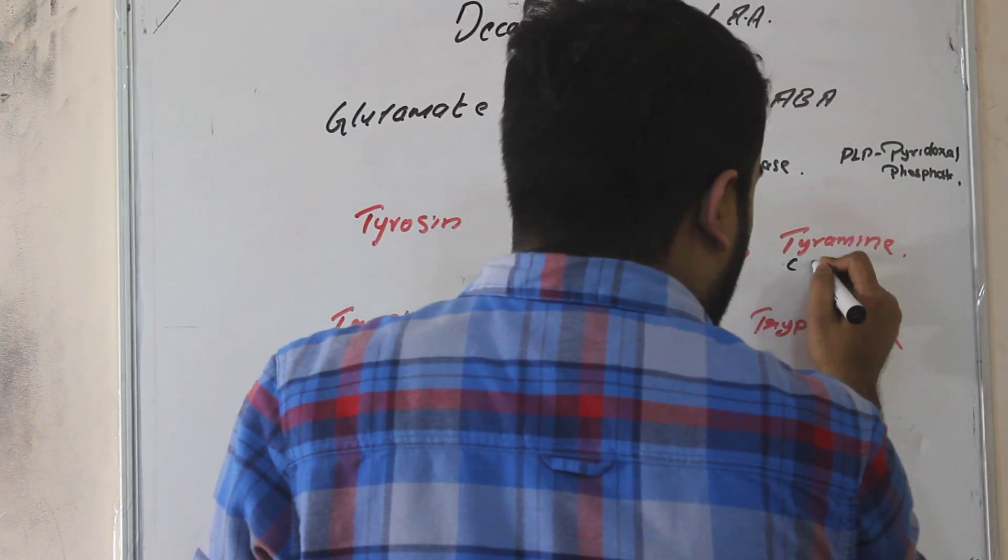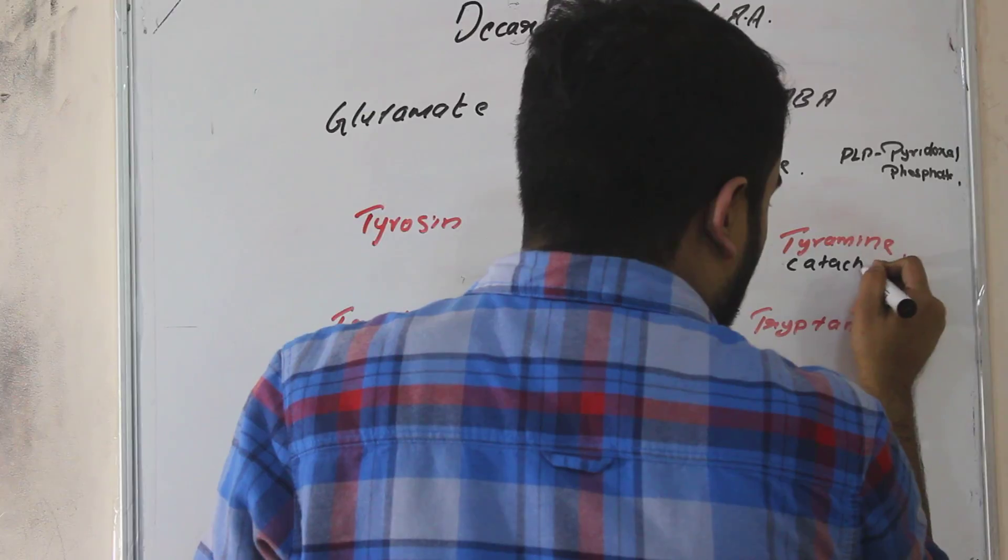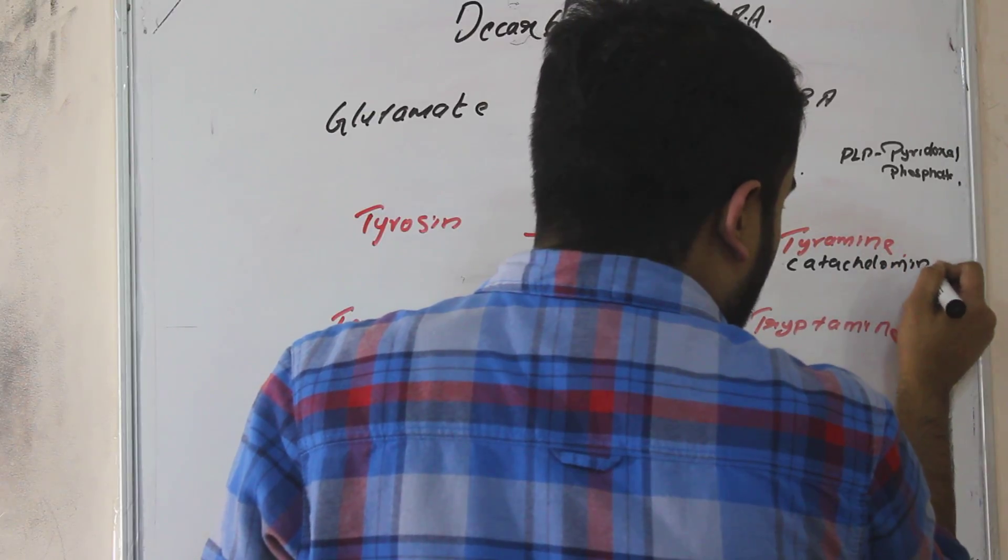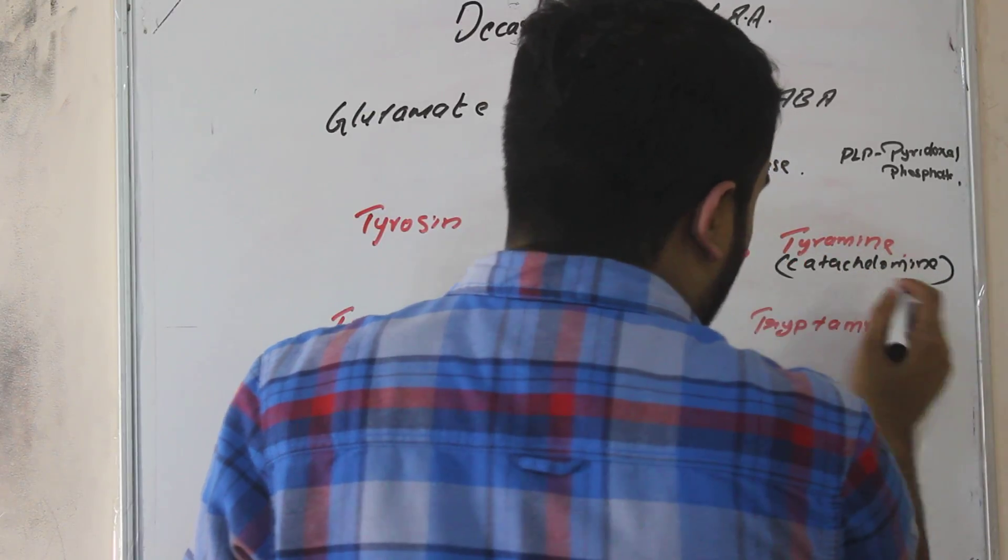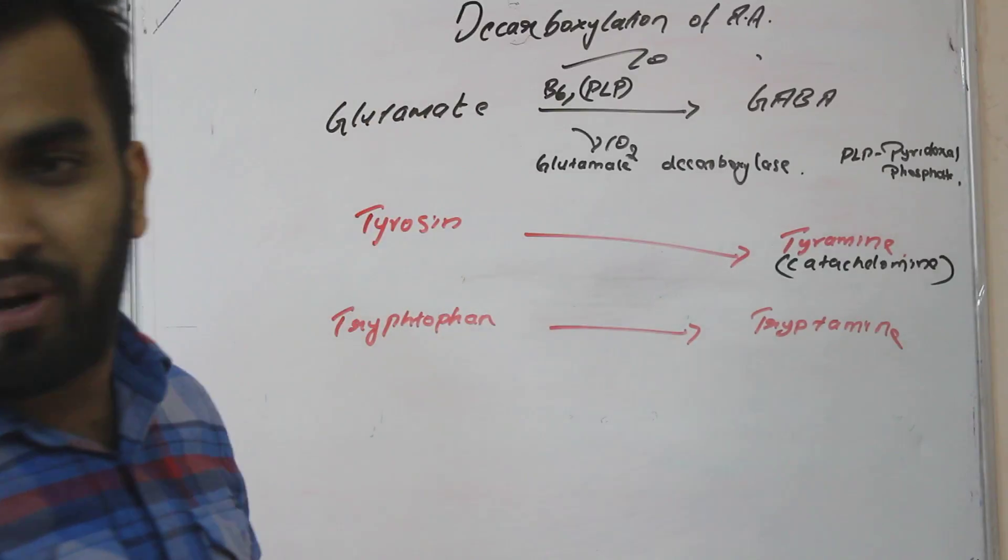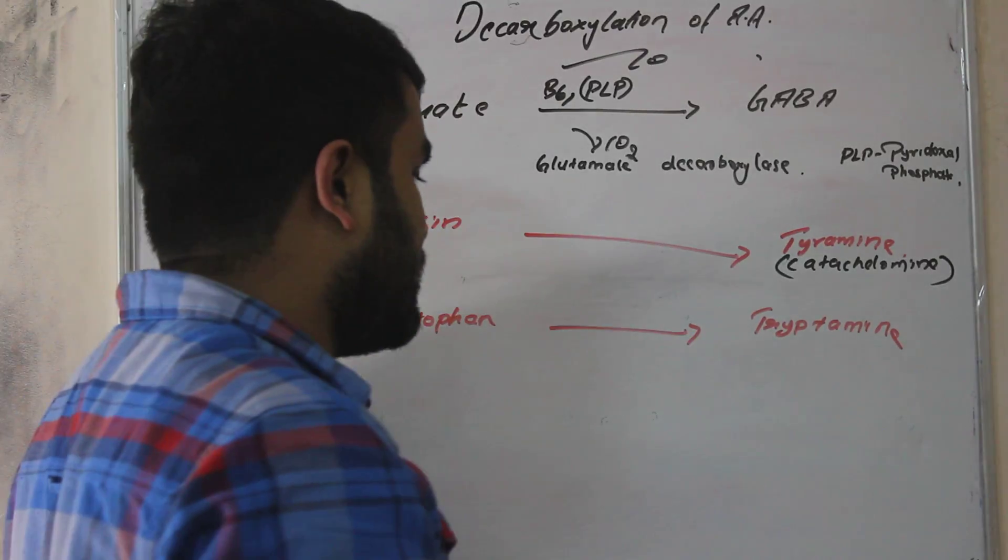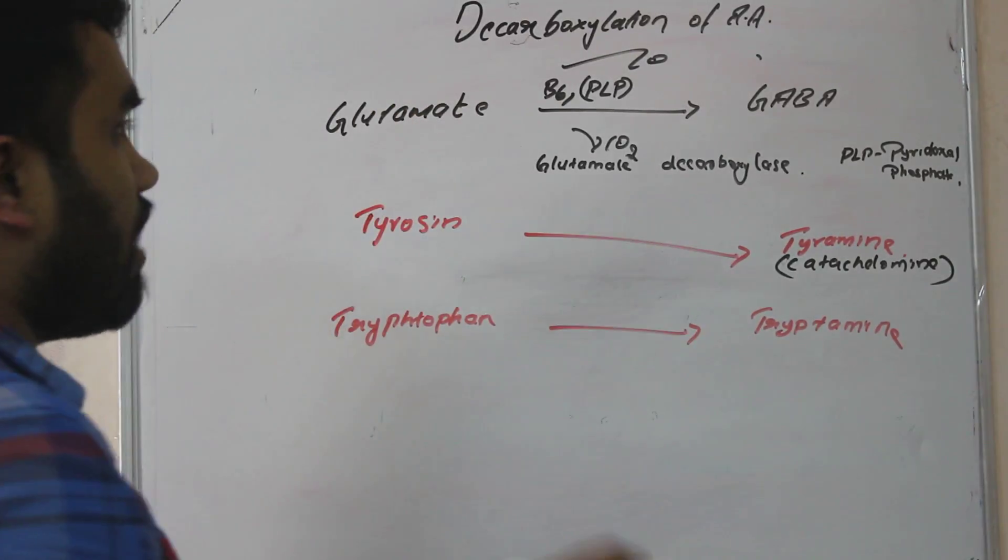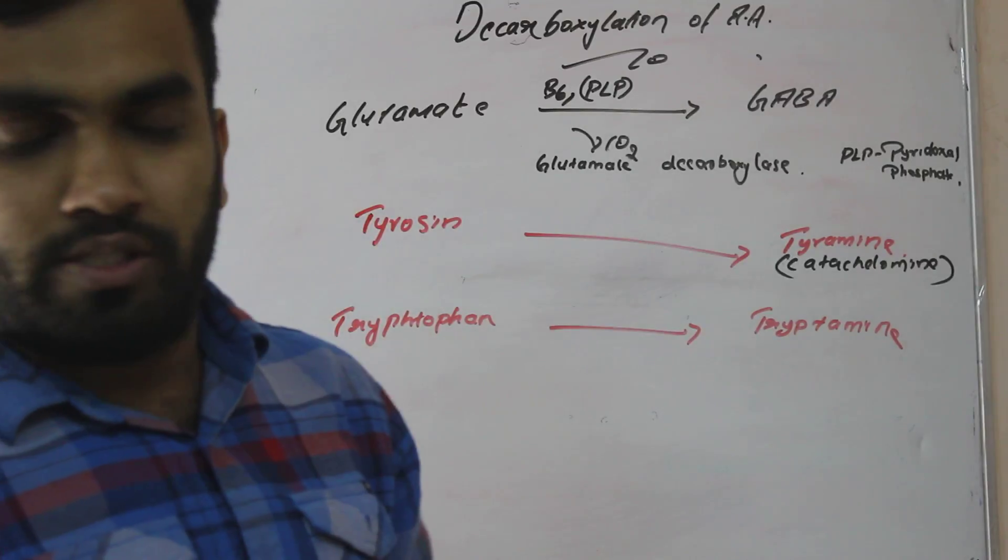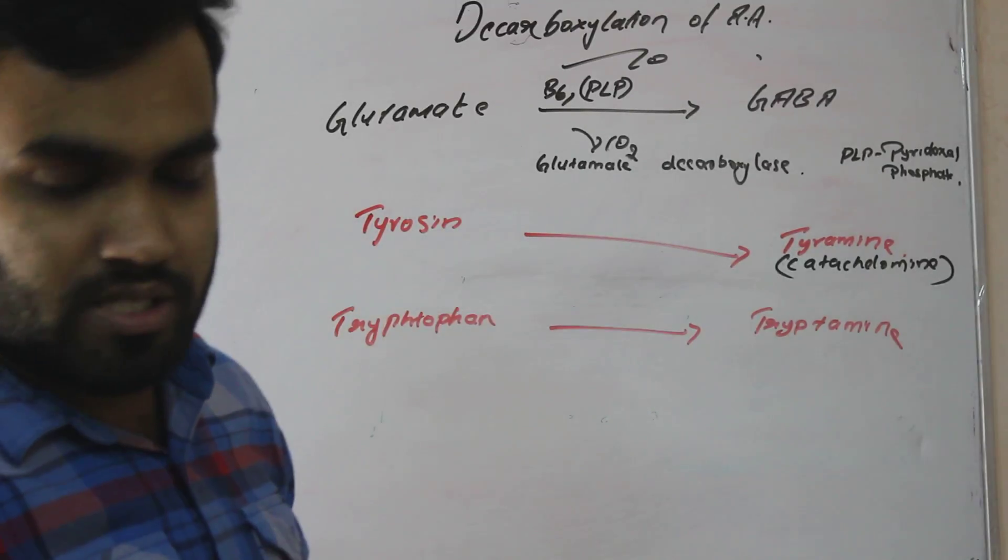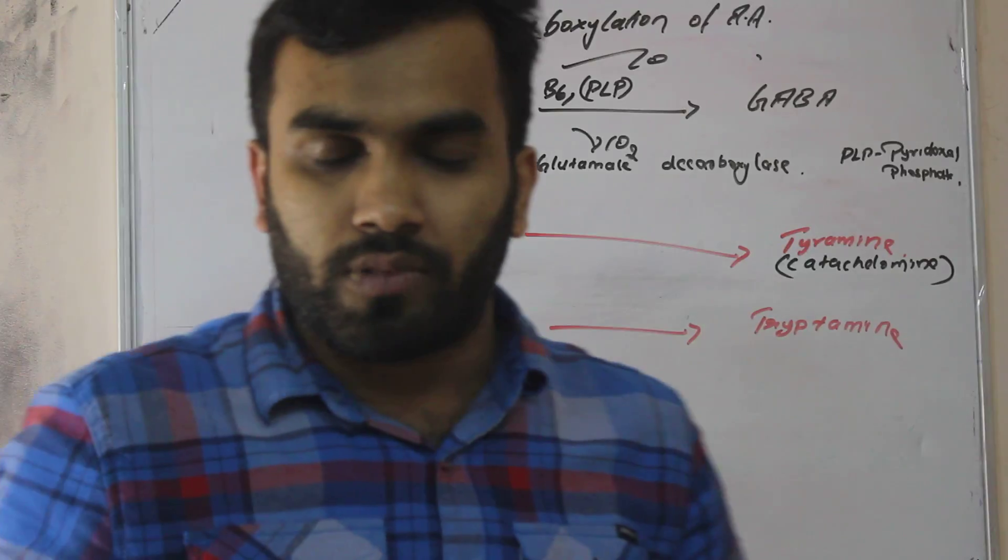Tyramine is from where the catecholamines are formed. All the catecholamines come from tyramine. Catecholamines means norepinephrine, epinephrine and dopamine. Clear right? So we have just been revising what we have all studied.